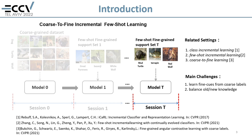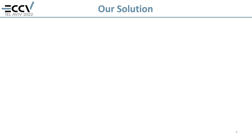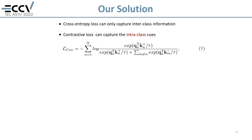There exist two questions. First, how to explore a finer embedding space from coarse labels. Second, how to balance old knowledge and current learning. We elaborate on how we train a generalizable base embedding space. We follow Anchor to use MoCo as the backbone, and use a combination of supervised learning with coarse labels and self-supervised contrastive learning to better explore fine cues in the coarse-labeled images.